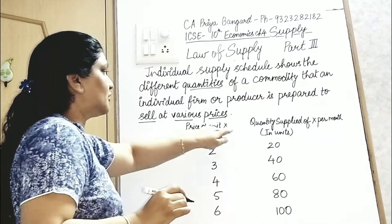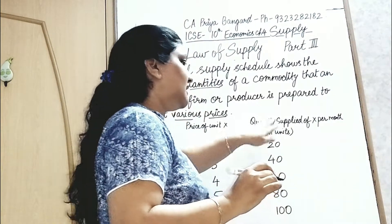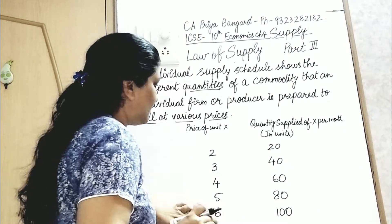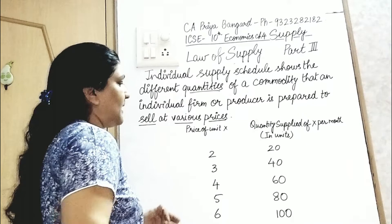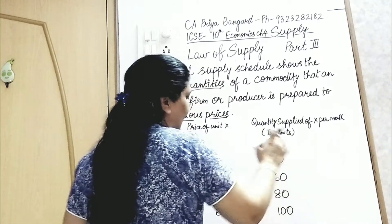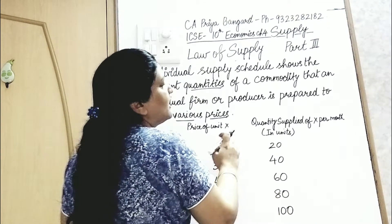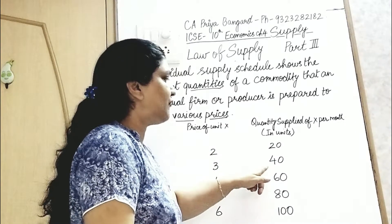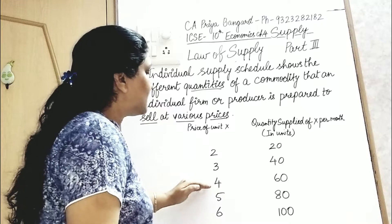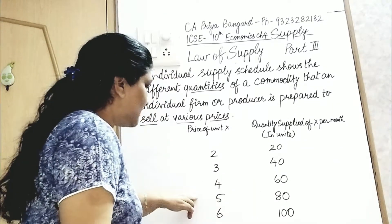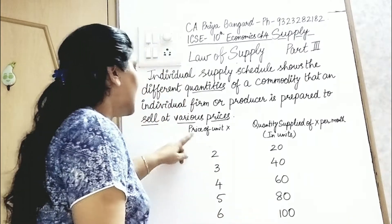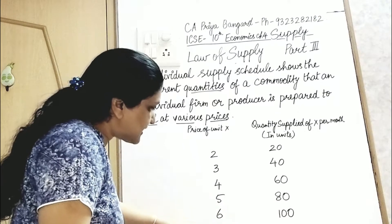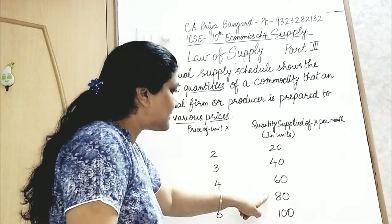The schedule has Price of unit X and Quantity Supplied of X per month in units. At price ₹2, the supplier is ready to supply 20 units. When price increases to ₹3, he supplies 40 units; at ₹4, he supplies 60 units; at ₹5, he supplies 80 units; and at ₹6, he supplies 100 units. This shows that as price increases, quantity supplied also increases.